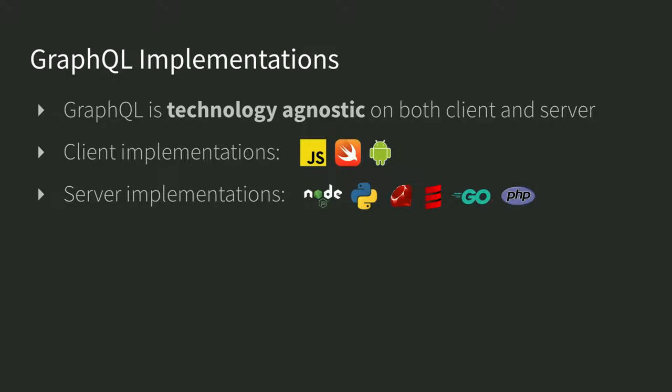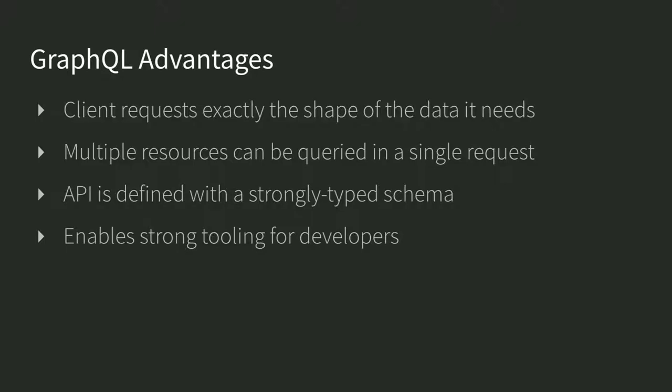On the client there are implementations for JavaScript, Swift, and Android. On the server, the most common was Node — when Facebook open sourced GraphQL they created a Node reference server. But there have been subsequent community server implementations for Python, Ruby, and of course PHP. When we think about why GraphQL, we think about addressing the challenges I mentioned: the client requests exactly the shape of data it needs, multiple resources can be queried in a single request, and your API is defined with a strongly typed schema — which enables strong tooling for developers. Some of this tooling is available for other API technologies, but some characteristics of GraphQL actually unlock a lot of these possibilities.